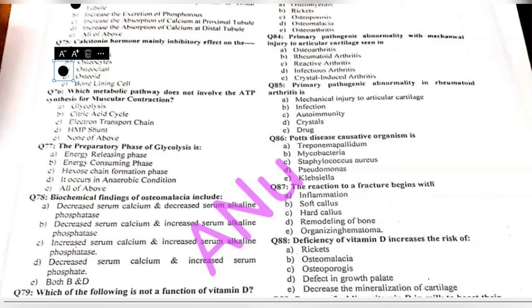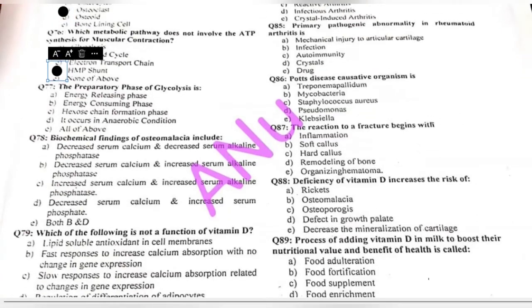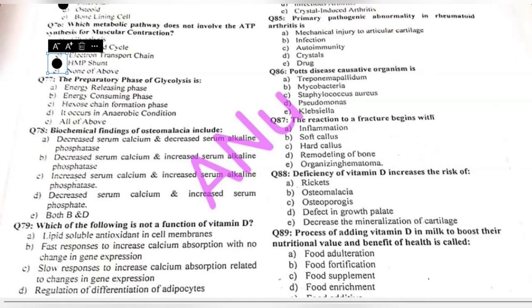Question 76: which metabolic pathway does NOT involve ATP synthesis for muscular contraction — glycolysis, citric acid cycle, electron transport chain, HMP shunt, or none of the above? The HMP shunt pathway is not involved in providing ATP for muscular contraction.